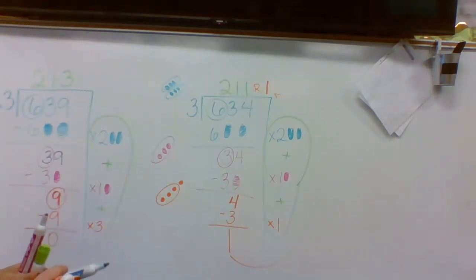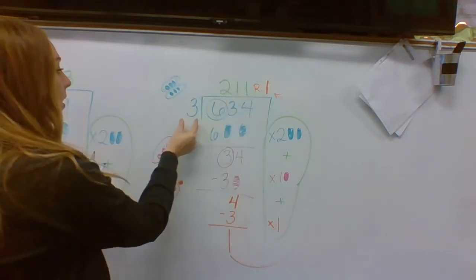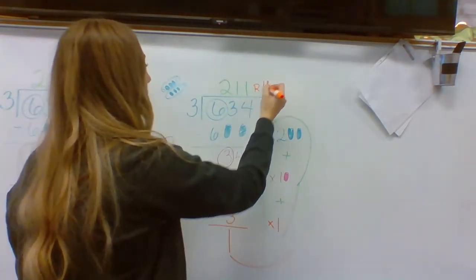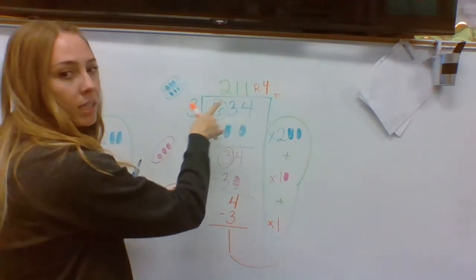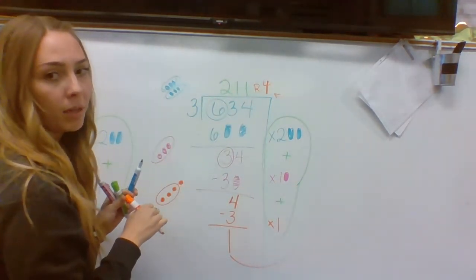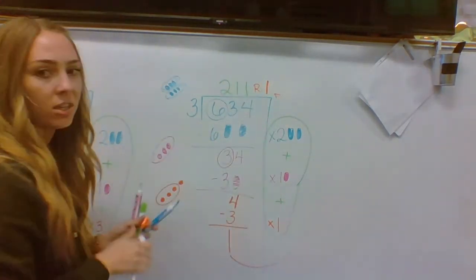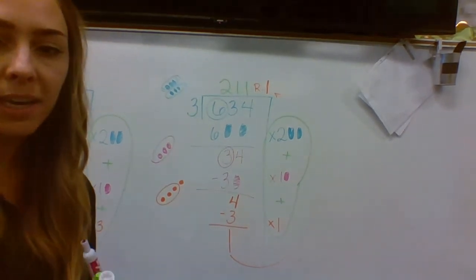The only trick there is to a remainder is that your remainder cannot be bigger than your divisor. For example, if you had a remainder of four, four is bigger than three, which means you could have fit at least one more group in there. So make sure your remainder is smaller than your divisor. You guys are going to practice some partial quotient with remainders. Good luck.